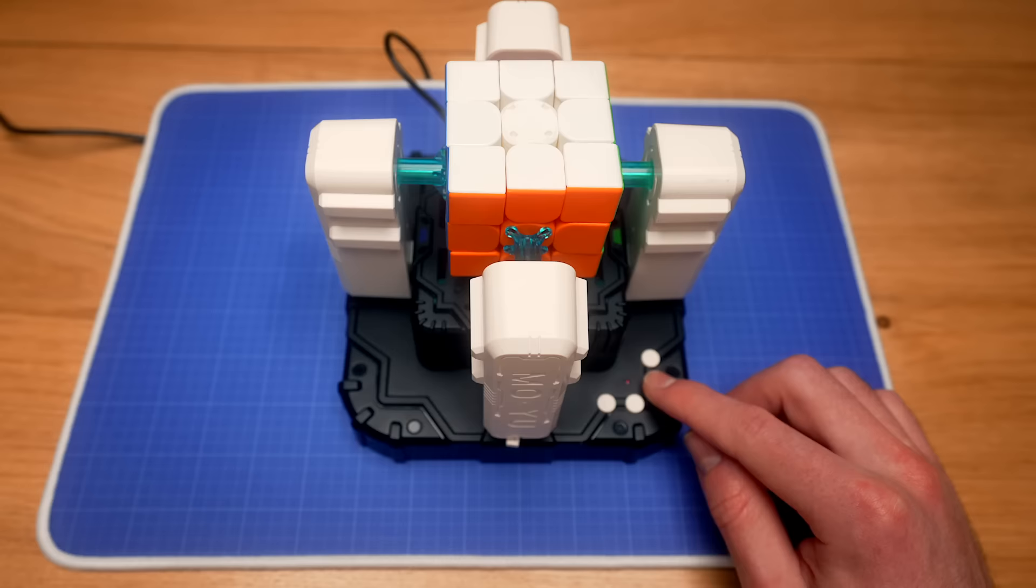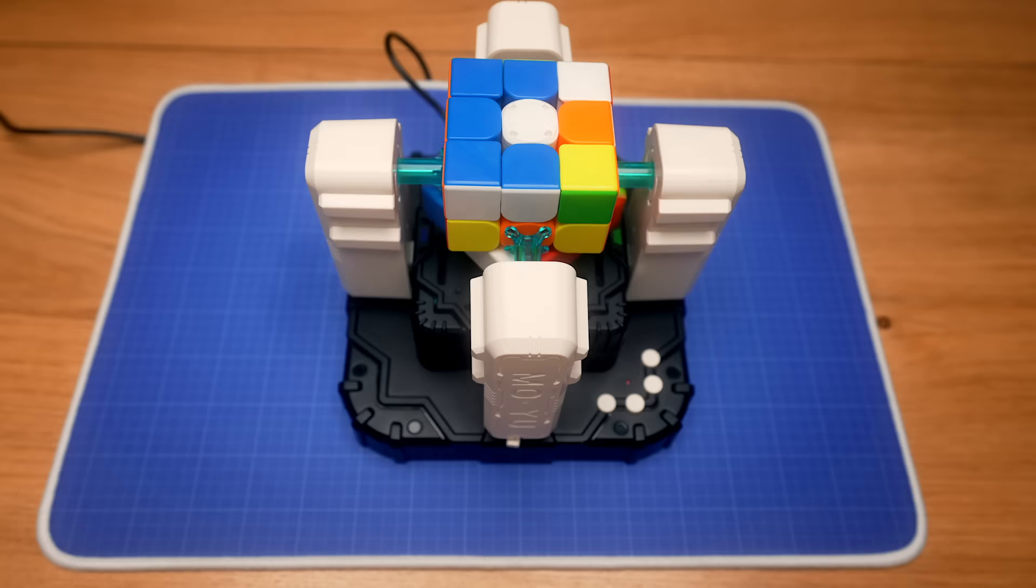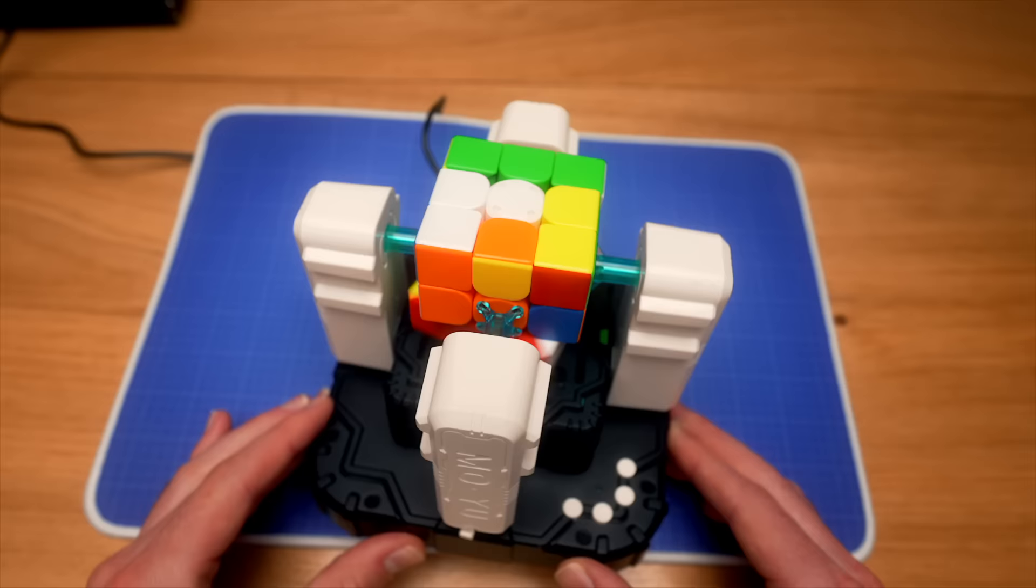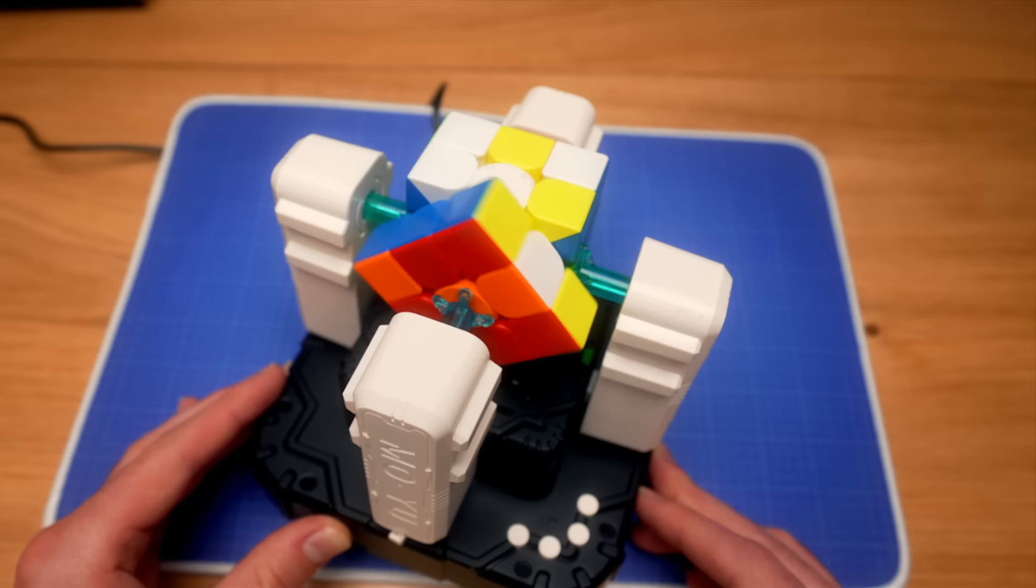So the cool thing about this robot is that it doesn't use a smart cube. This is just a normal cube inside of it. What you can see it do right now is scanning the colors to see what the scramble is like. That's what these flashing lights are. And once it is done with that, once the light stops blinking, it actually solves the cube. And after a few twists, voila.